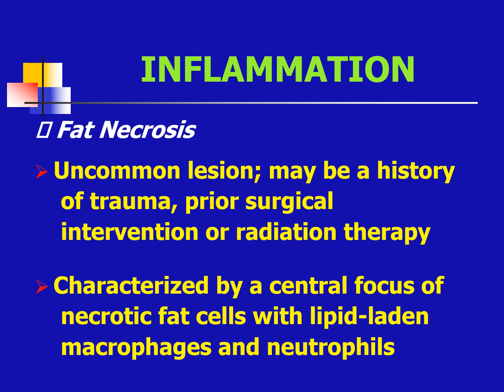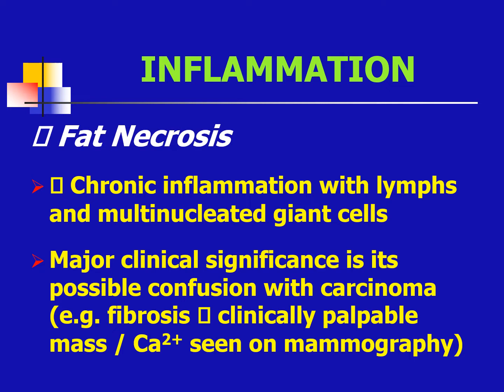Another form of inflammation would be fat necrosis. It is an uncommon lesion which may have a history of trauma, prior surgical intervention, or radiation therapy. It is characterized by a central focus of necrotic fat cells with lipid-laden macrophages and neutrophils, and chronic inflammation with lymphocytes and multinucleated giant cells. Its major clinical significance is that it is also confused with carcinoma because of fibrosis, a clinically palpable mass, and calcifications seen on mammography.